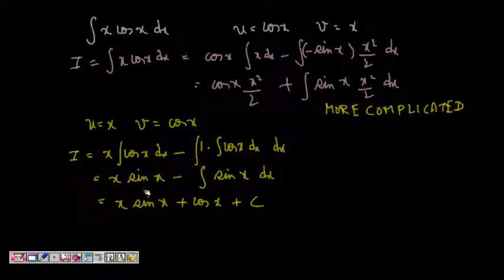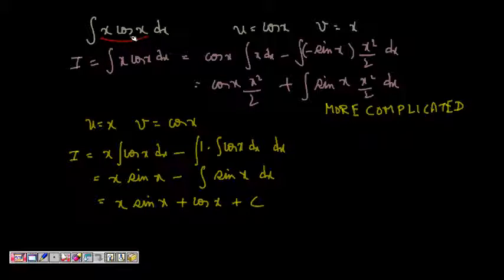Next, we solve integral of x cos x. You can verify that you cannot apply partial fractions here, and you cannot do substitution because there is no function whose derivative is also present. Because there are two functions in a product, we will use integration by parts.